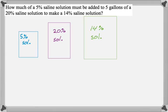I like to draw the picture, and then I like to be really organized underneath it. So I'm going to reiterate our percents. We have to add together 5% and 20%, and ultimately I want to end up with 14%. Now I'm going to think about how much of each I have.